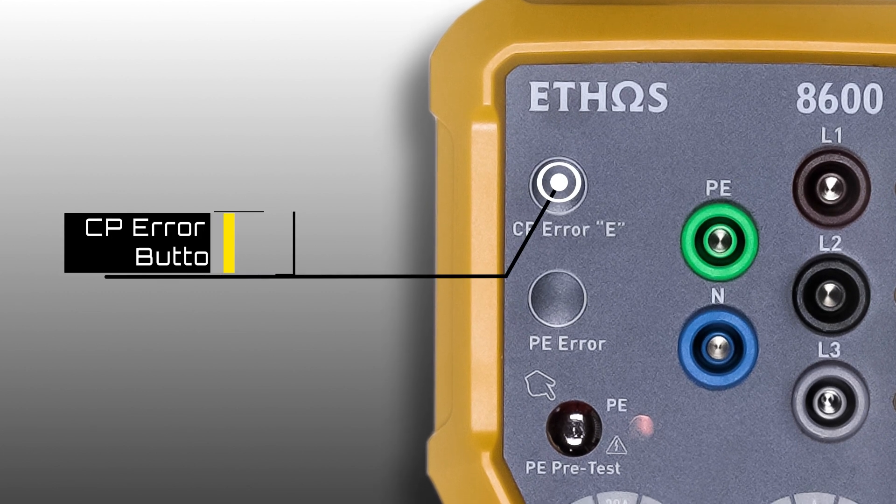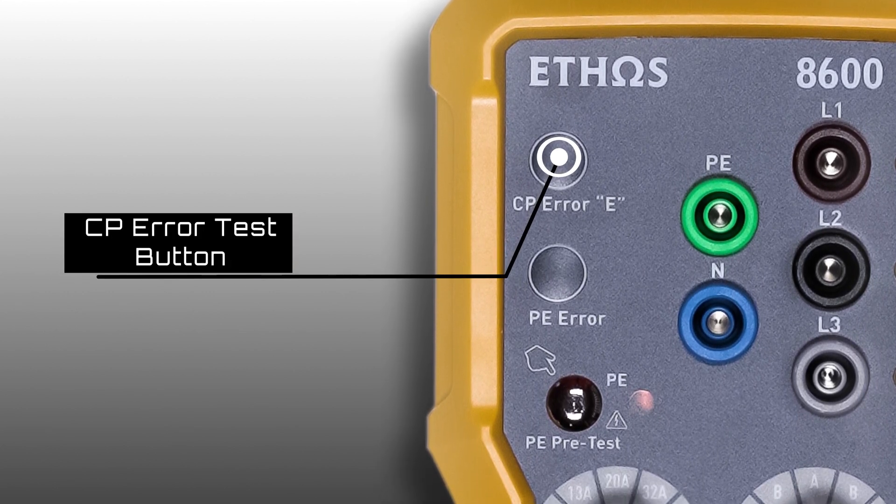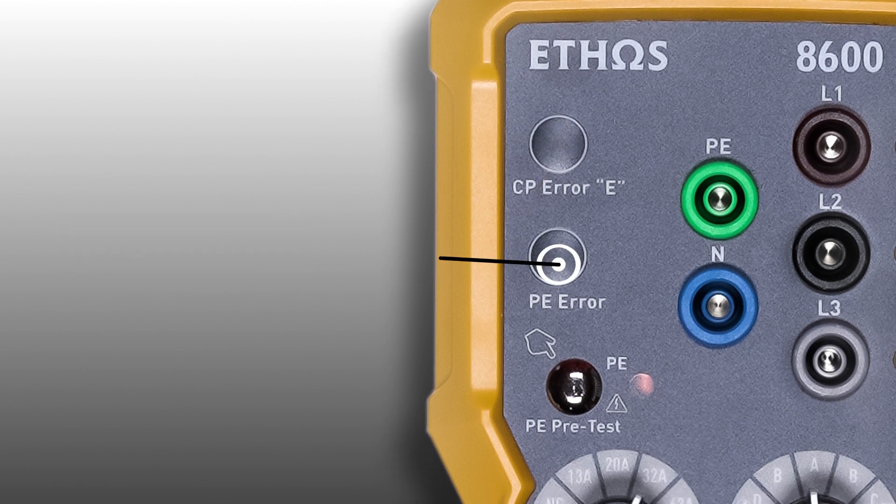CP error test button. This is pressed to test that the EV charge point is communicating with the vehicle.